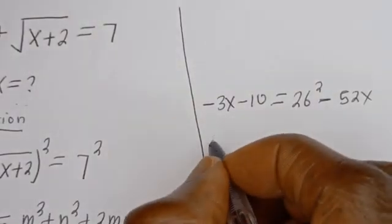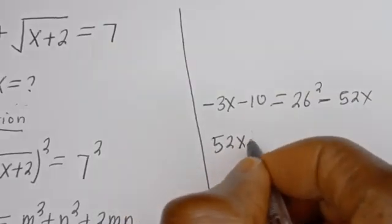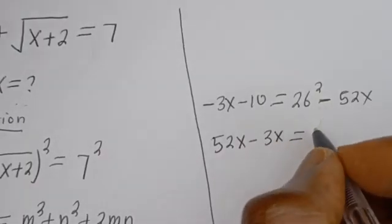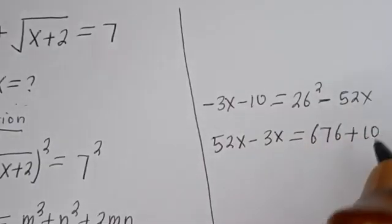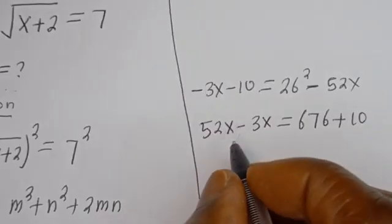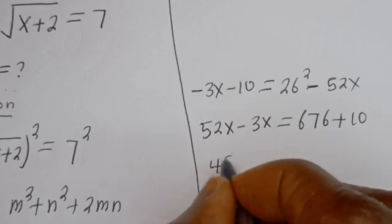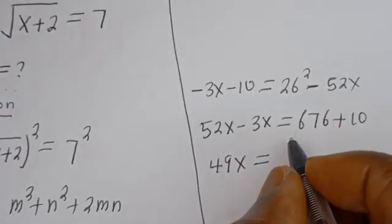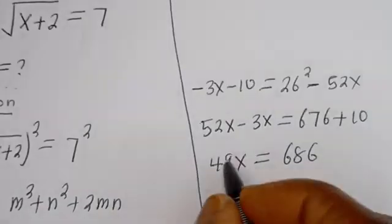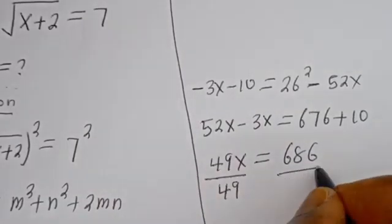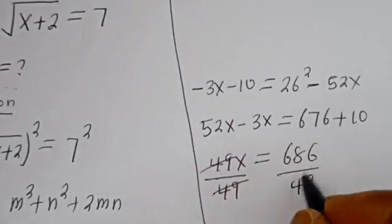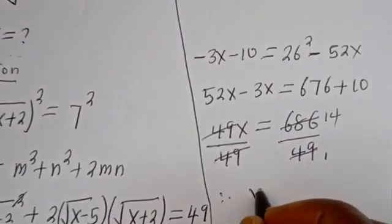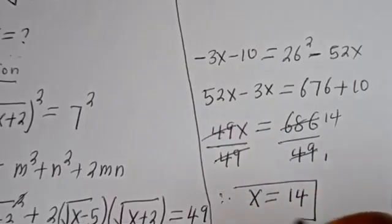Collecting like terms: 52s minus 3s is equal to 26 squared plus 10. Now 52s minus 3s is 49s, and 26 squared is 676, so 676 plus 10 is 686. Therefore 49s equals 686. Dividing both sides by 49, we get s equals 14. Therefore s is equal to 14, and this is the final answer.